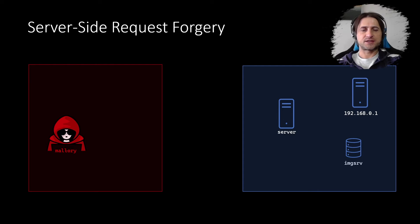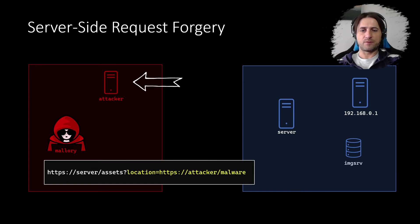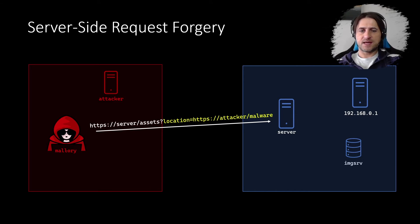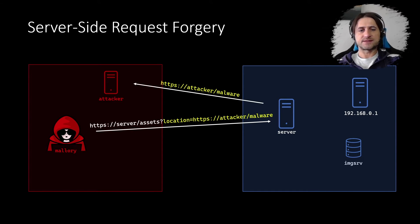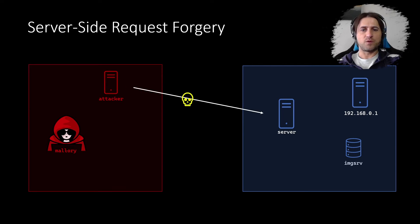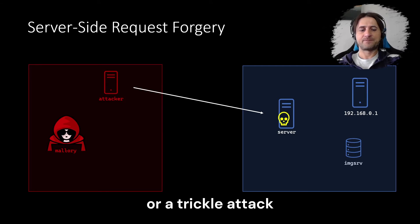There are many variations of this attack. The first variation is that the attacker might also host their own attack server, with the goal of having the web server's infrastructure connect to the attacker's machine. In this scenario, the URL points to attacker slash malware. The server is vulnerable, creates the separate request, and connects to the attacker's server. Mallory, controlling that server, can serve anything she wants — malware or files stored on the machine for later use, or a denial of service attack by sending gigabytes of data or a trickle attack.